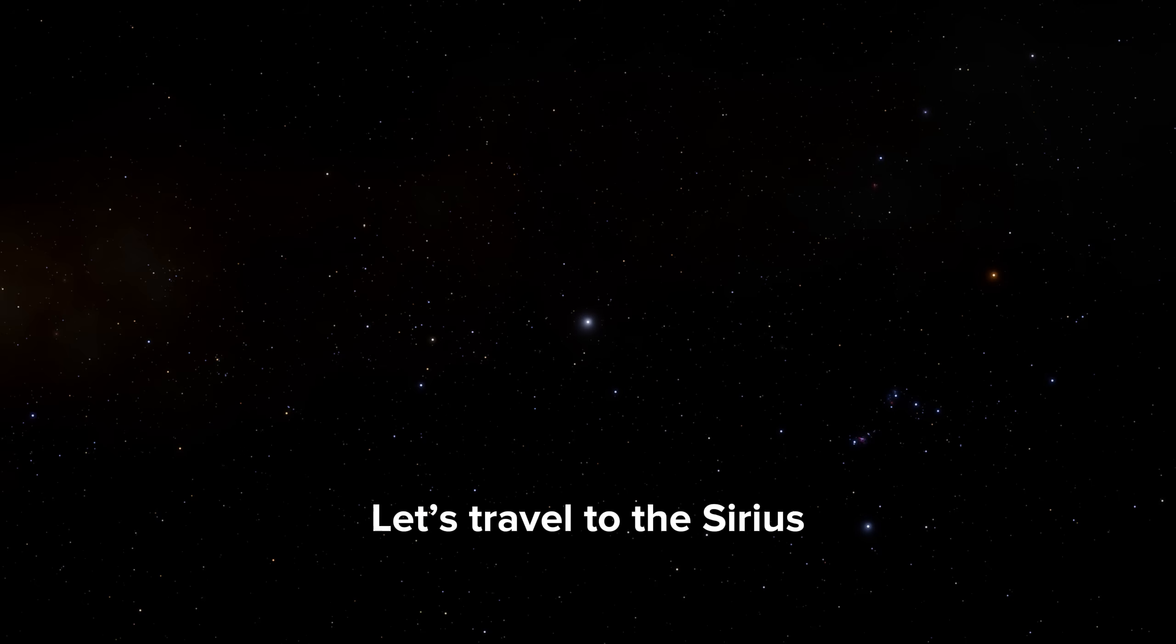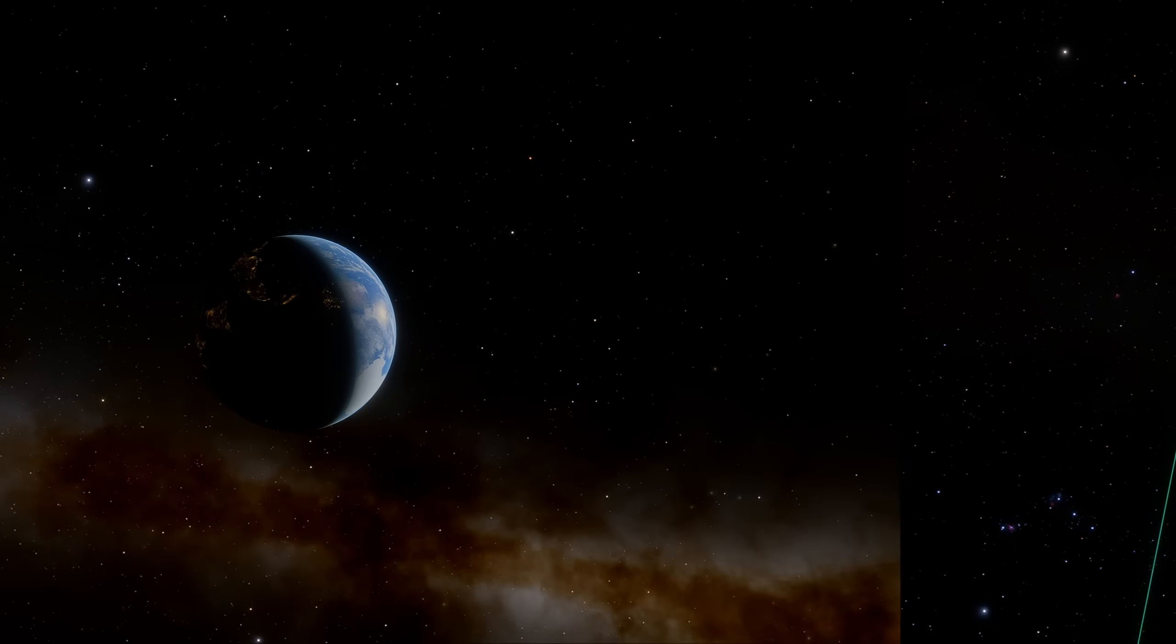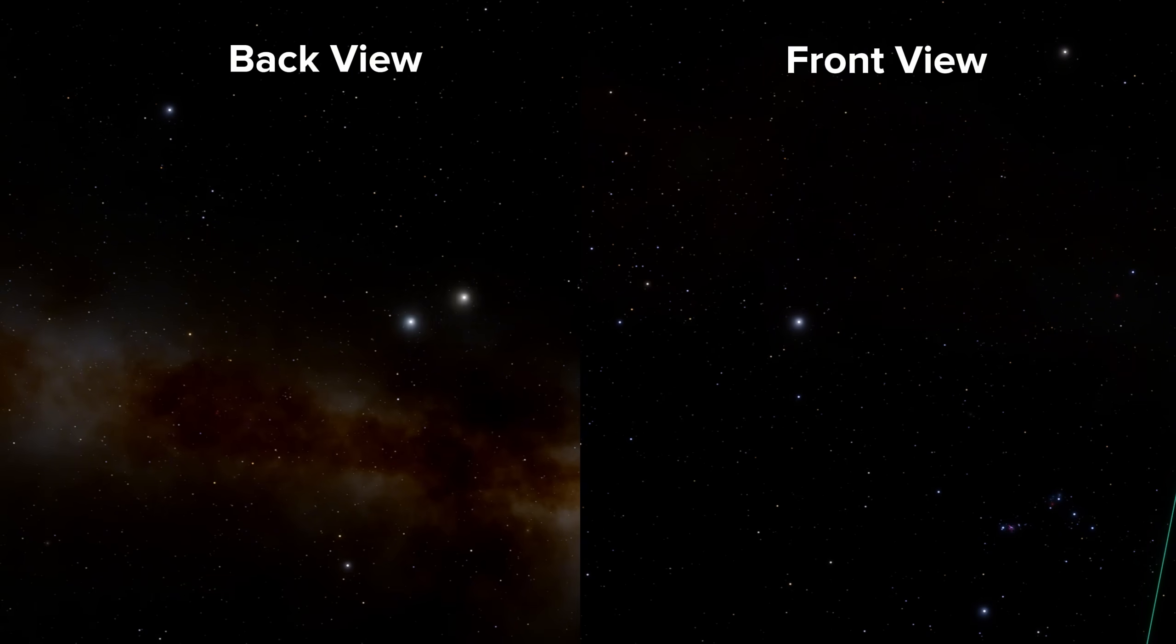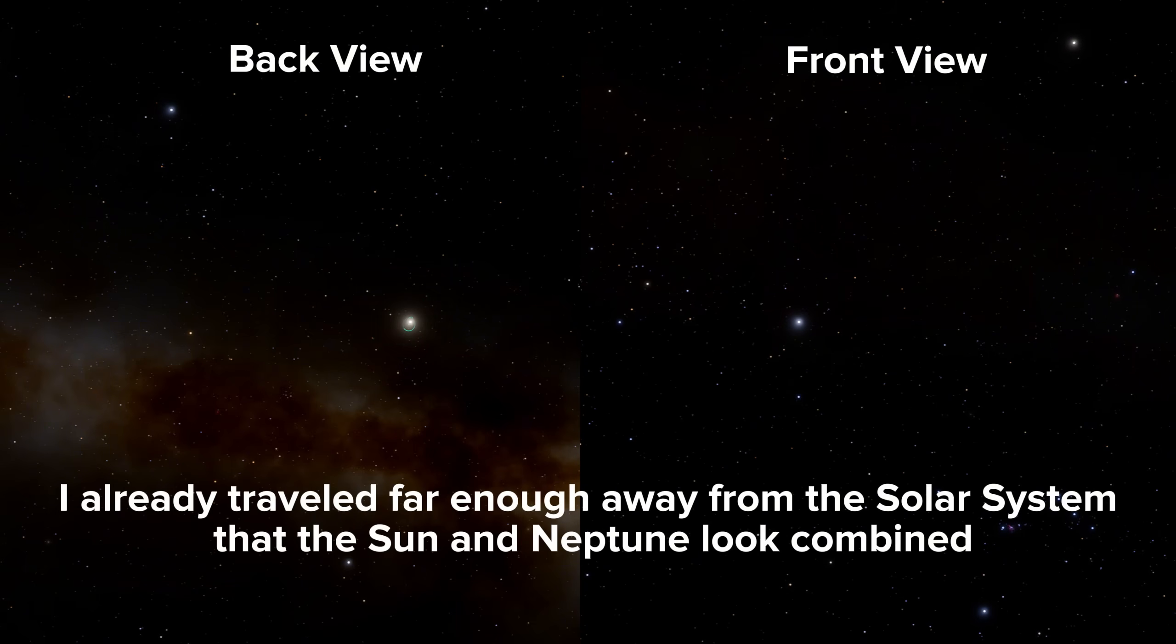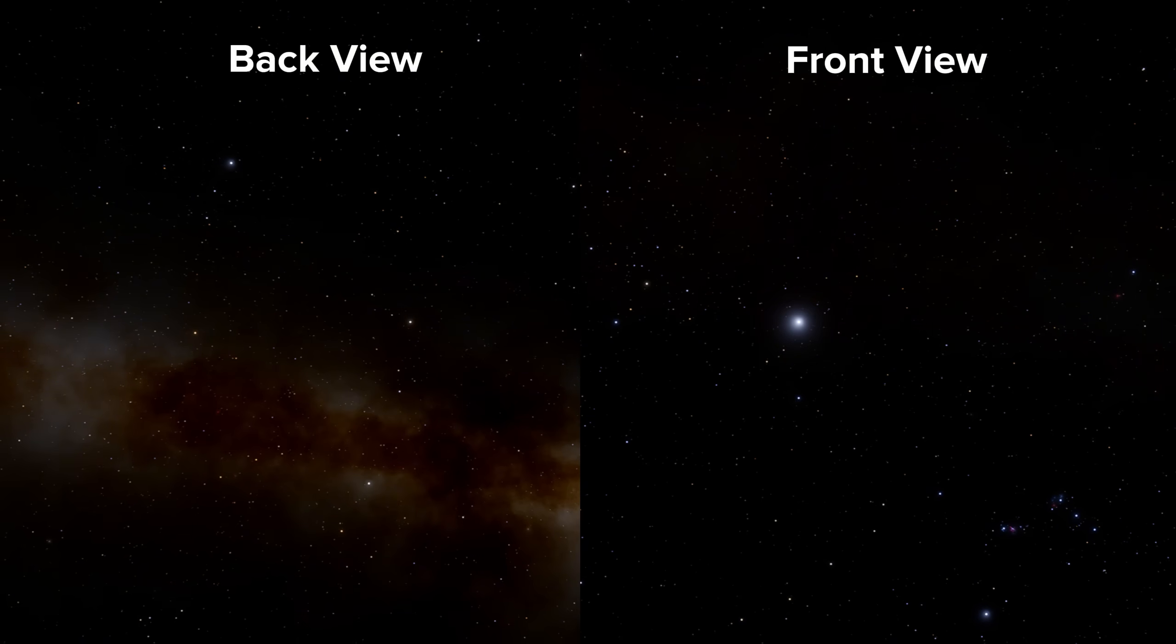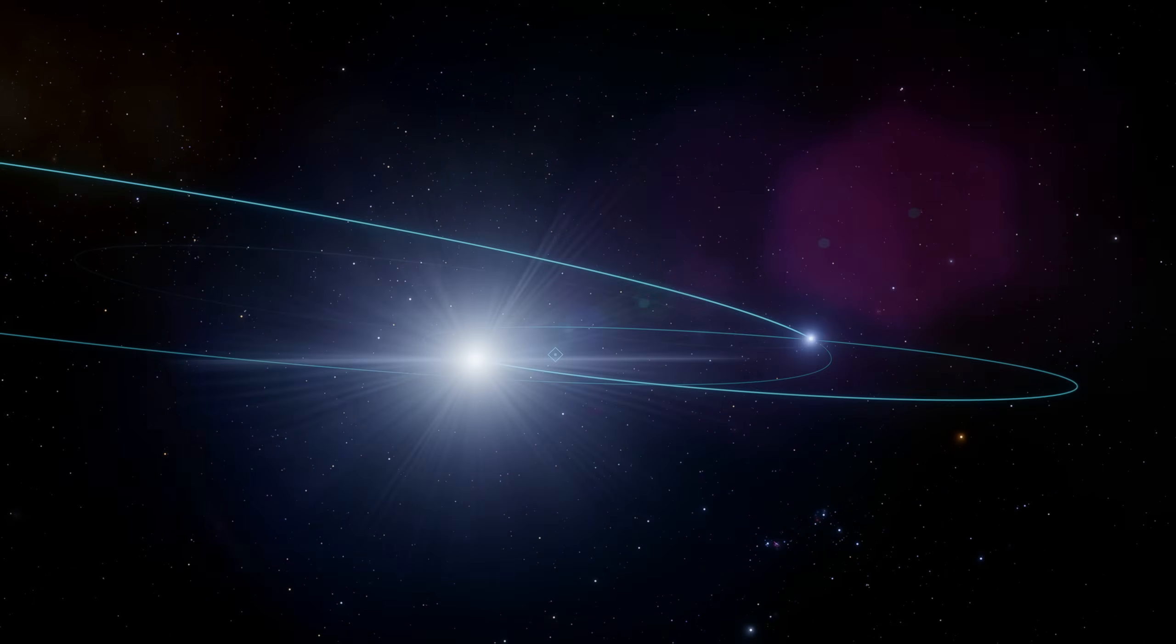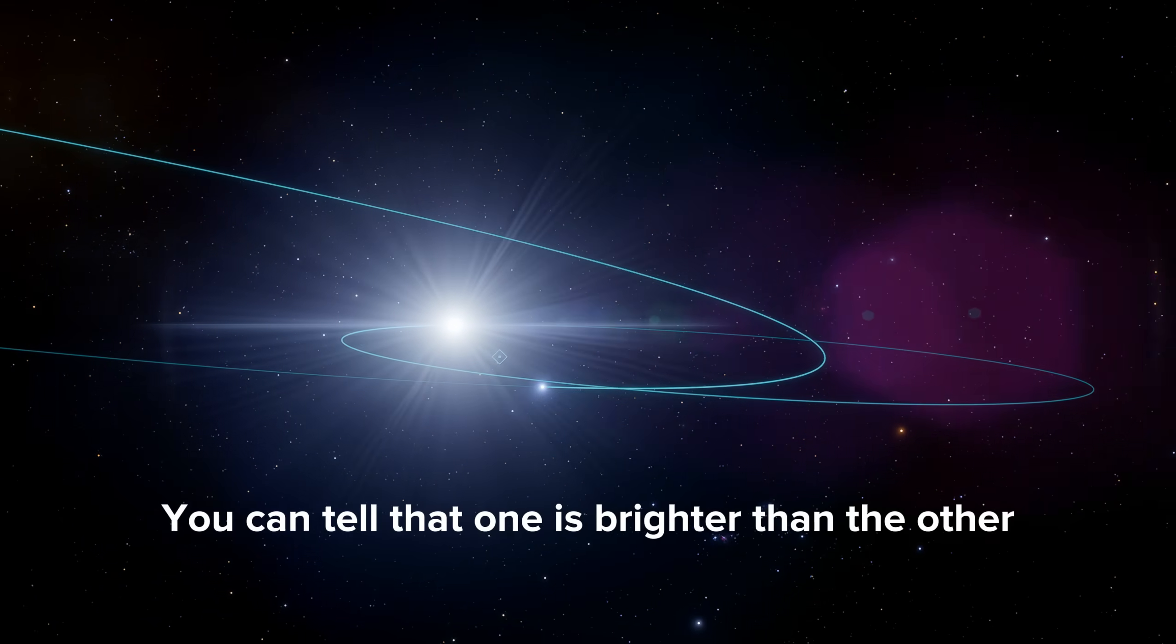Let's travel to the Sirius. I already traveled far enough away from the solar system that the sun and Neptune look combined. I sped up to one year per second. You can tell that one is brighter than the other.